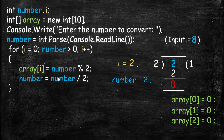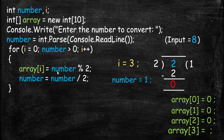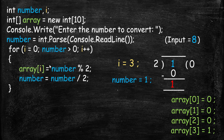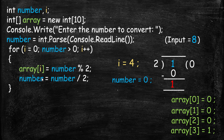Number 2 divided by 2 gives us 1, so number becomes 1. Then i increments to 3, and 1 is greater than 0, so the condition is true. At array index 3 we store 1 divided by 2 — it can't divide evenly, so the remainder is 1. Then 1 divided by 2 gives 0, so number becomes 0. i increments to 4, and 0 is not greater than 0, so the condition is false and the loop stops.